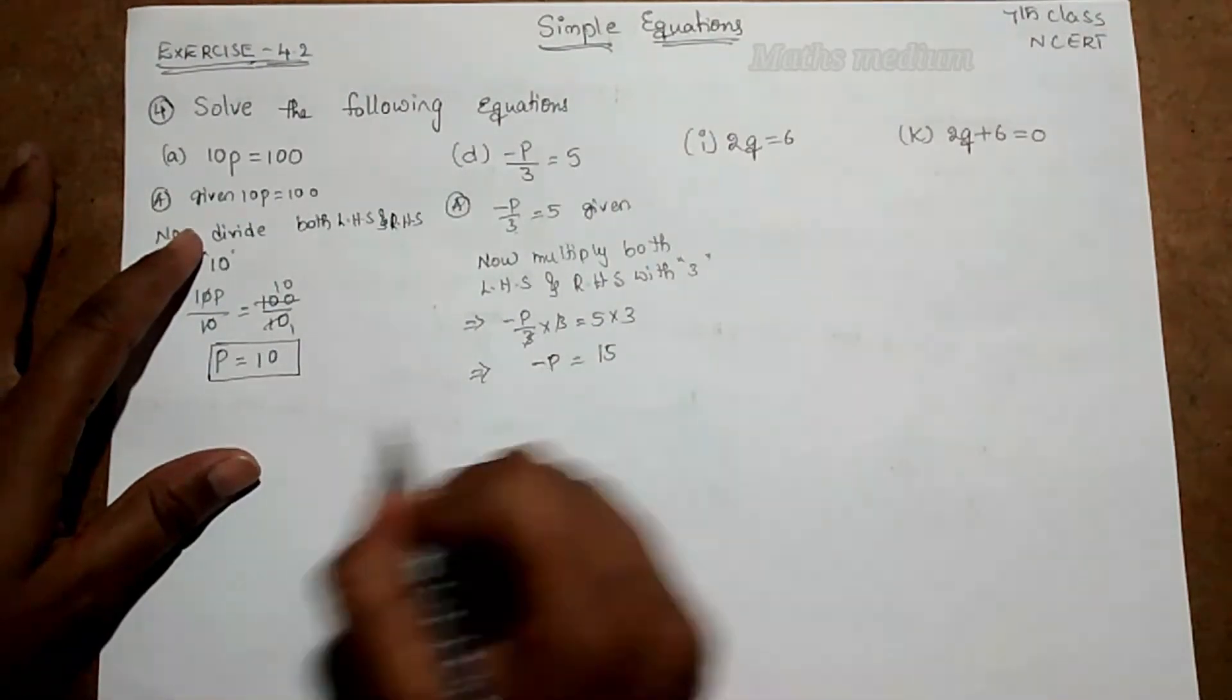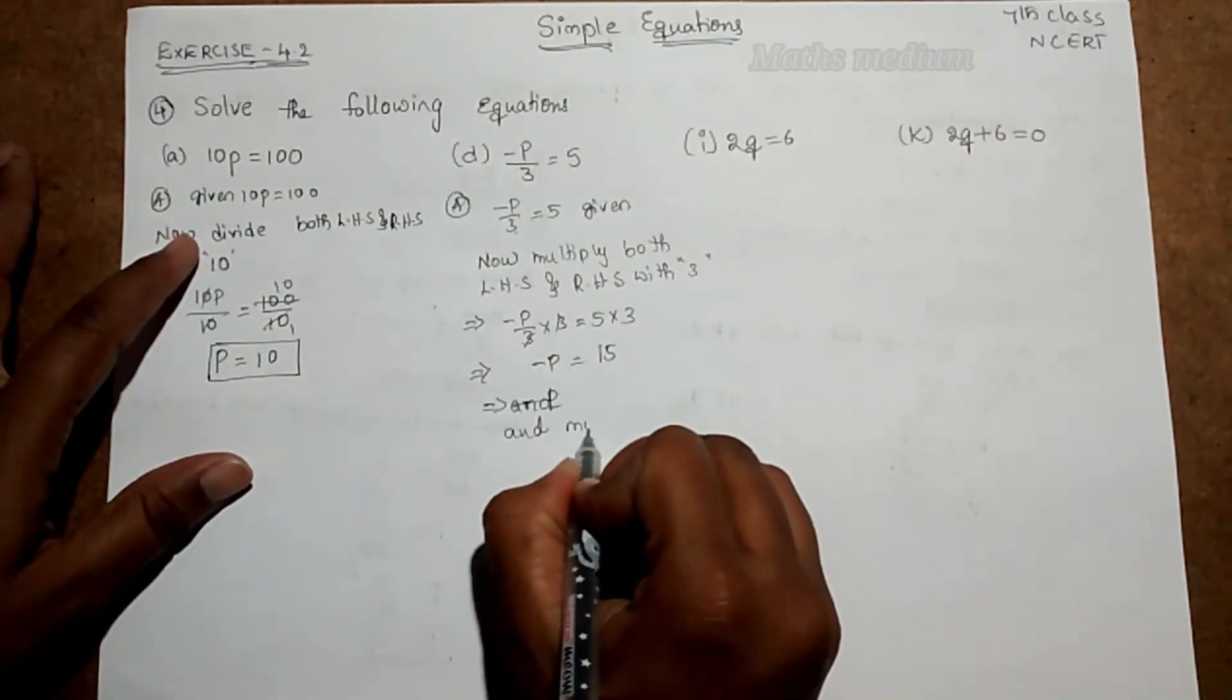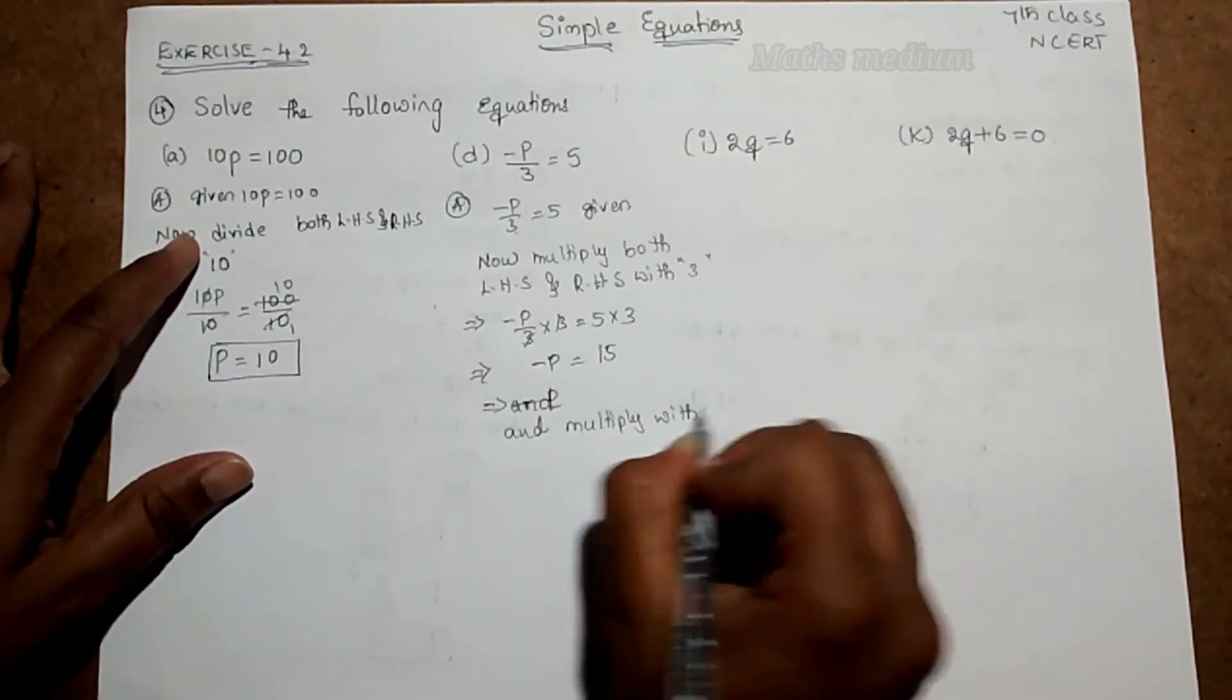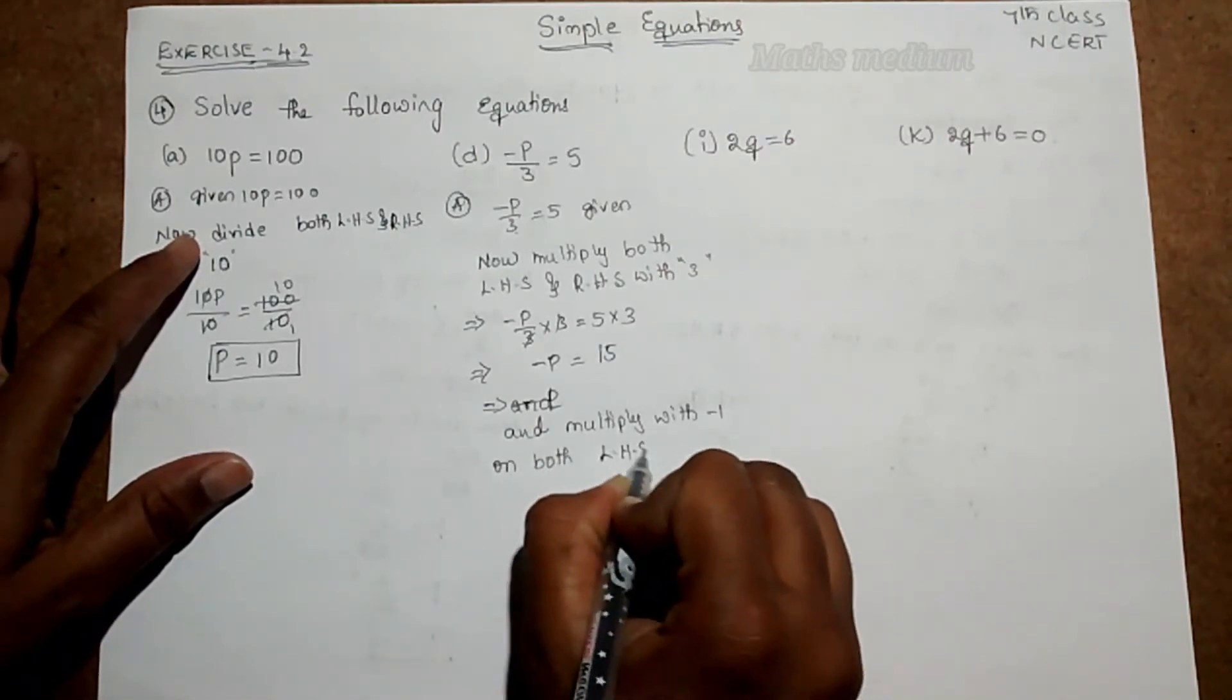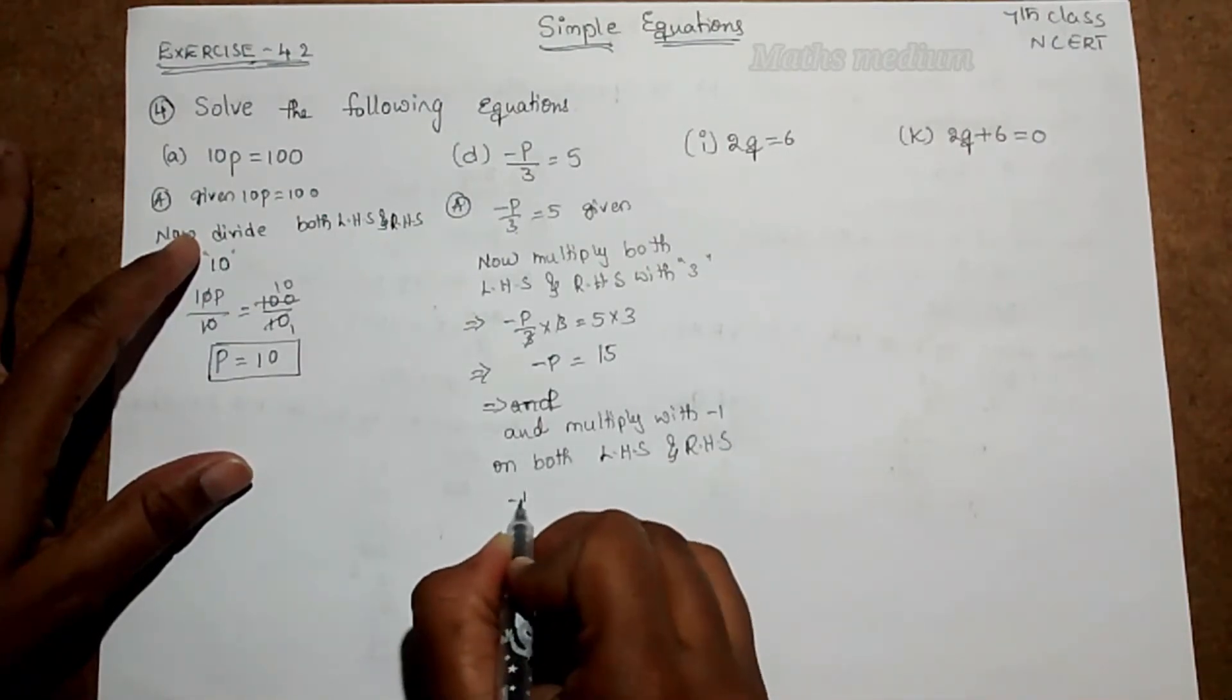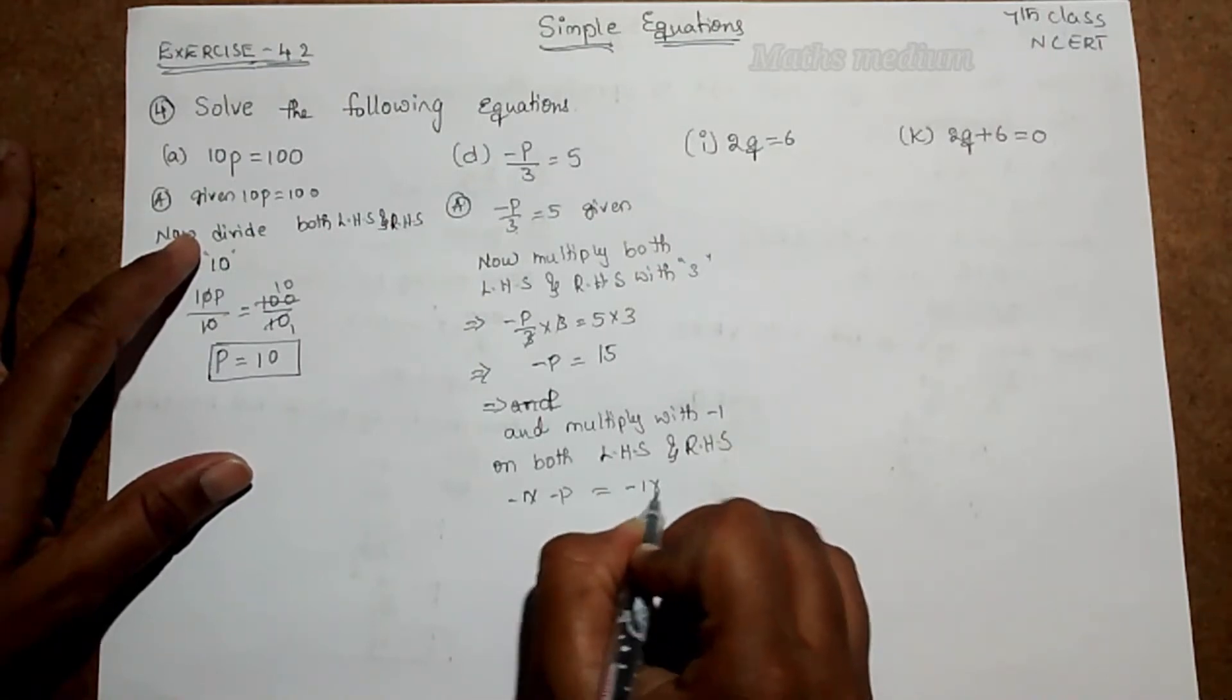We want the variable as a positive integer. Take another step and multiply. So multiply with minus 1 on both LHS and RHS. So minus 1 into minus p is equal to minus 1 into 15.